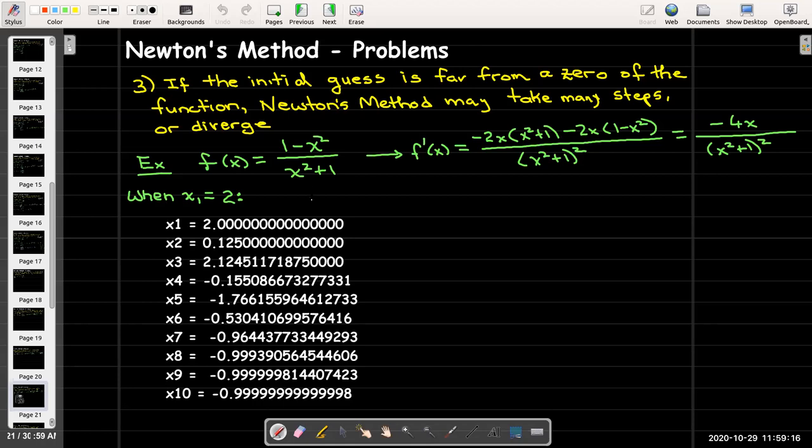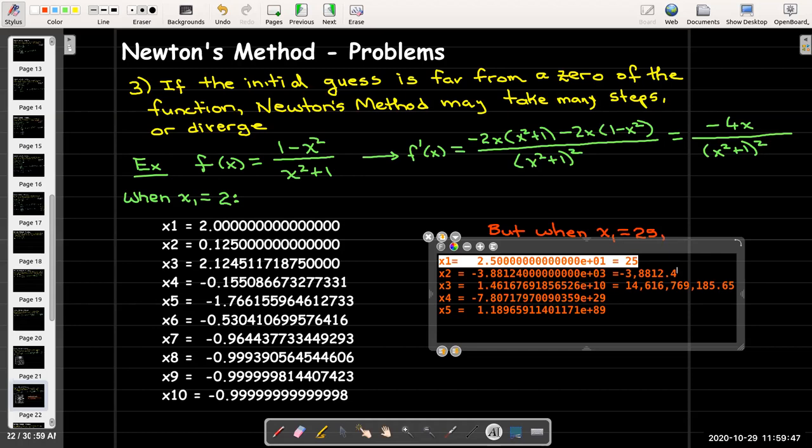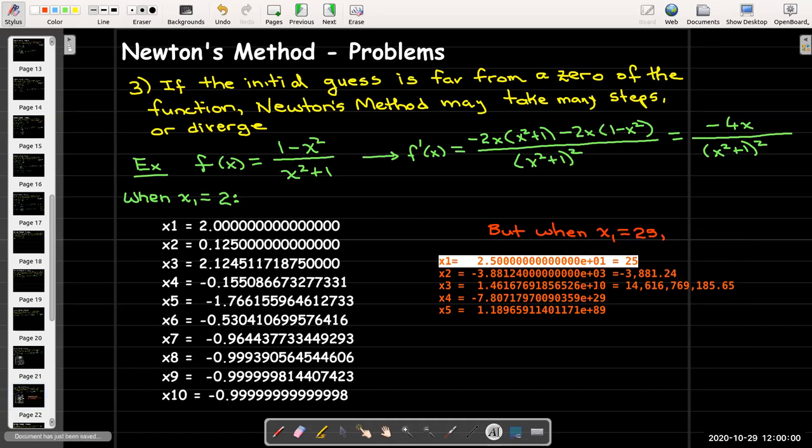However, if I were to take a value which is far from 1 or negative 1, maybe if I take, say, my initial guess to be 25. Well, x sub 2 then is already negative 3,800 and I must have that decimal place in the wrong location. Go ahead and fix that. It would be 3,881.24. But x sub 3 now is already this huge number, 14 trillion some odd. And then they just get larger and larger and, in fact, gets too large for even my calculator to keep them. So when we're far away, the Newton's method simply diverges.